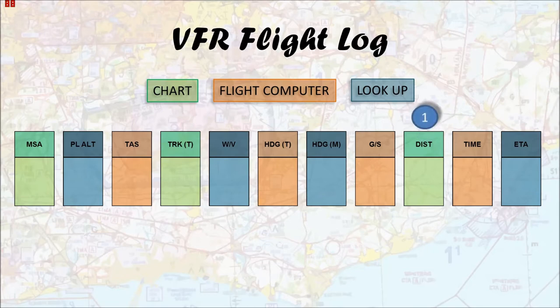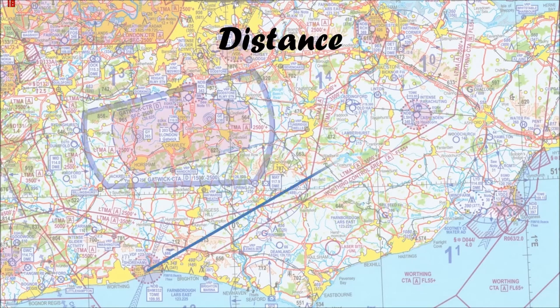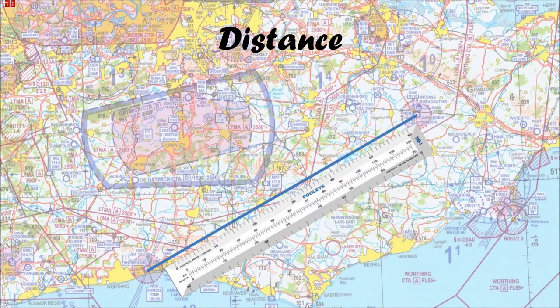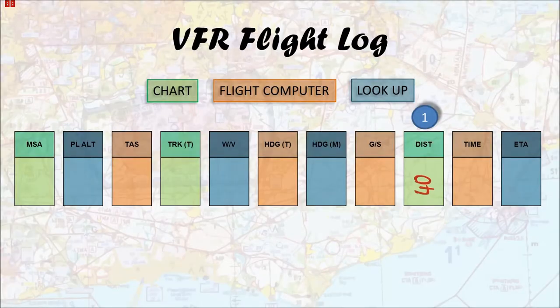First thing for me is to get the map out and work out how far it is from A to B. We're going from Shoreham today to Lashenden. We get our flight ruler out — make sure you're using the right side, as they normally have quarter-mil graduations on one side and half-mil on the other. We're using a CAA southern half-mil chart, so make sure you have the half-mil graduations. The distance from Shoreham to Lashenden is 40 miles, and we'll pop that into our distance table.